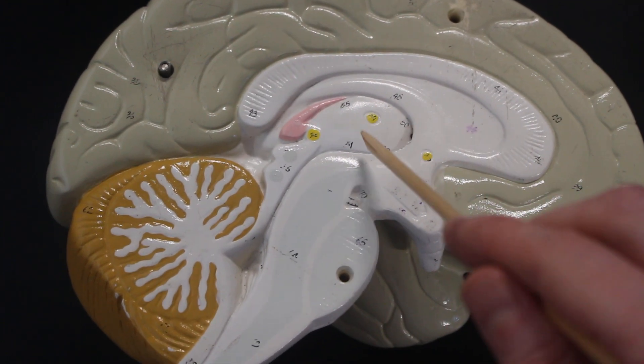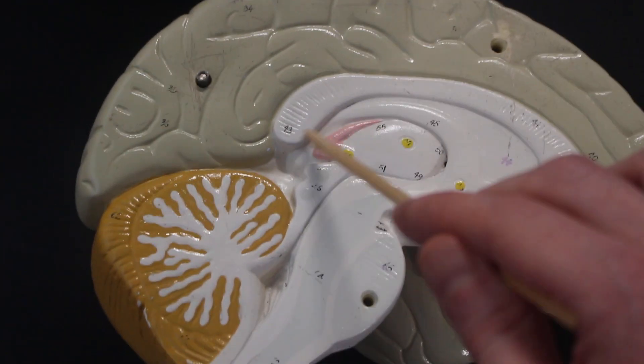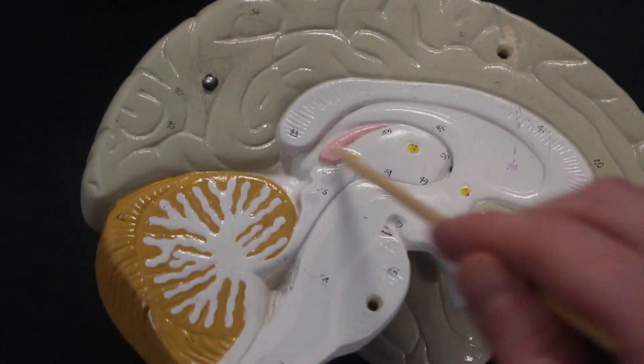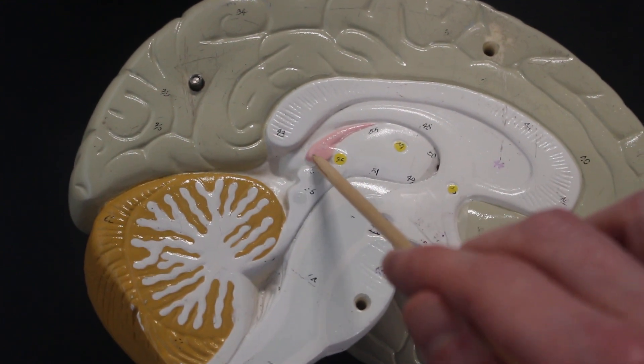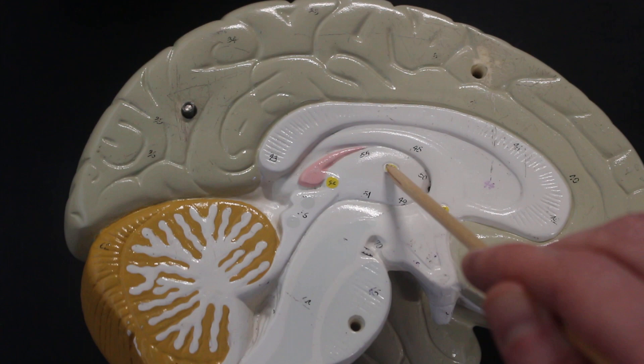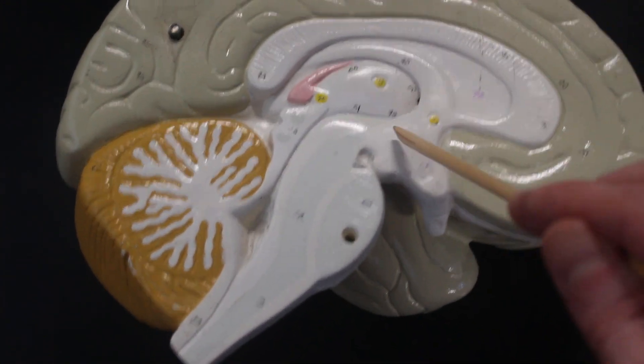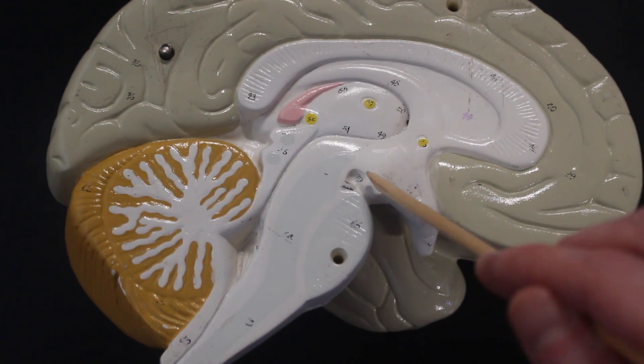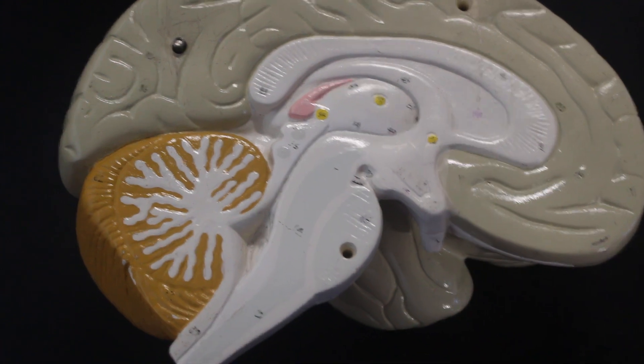We also have here, all of this, is the diencephalon. Diencephalon has three parts. Diencephalon has the epithalamus, which begins with the pineal gland. The thalamus, which in this dot here is the intrathalamic adhesion. The hypothalamus, with the mammillary body hanging off of it. Right here is the optic chiasm.